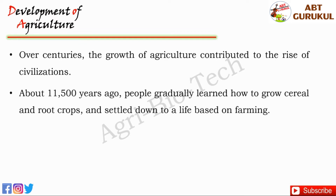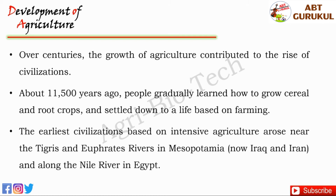About 11,500 years ago, people gradually learned how to grow cereal and root crops and settled down to a life based on farming. The earliest civilizations based on intensive agriculture arose near the Tigris and Euphrates Rivers in Mesopotamia, now Iraq and Iran, and also the Nile River in Egypt.